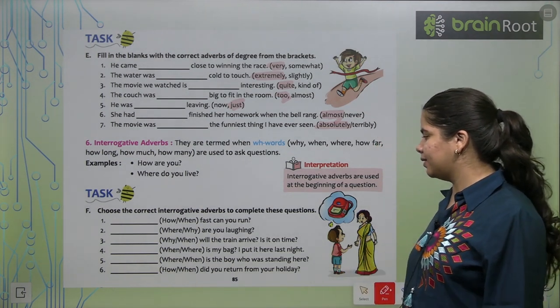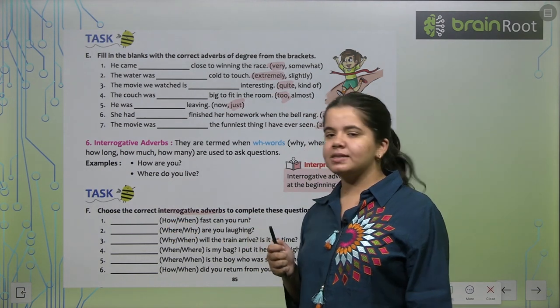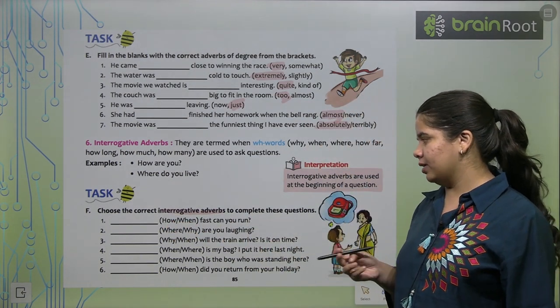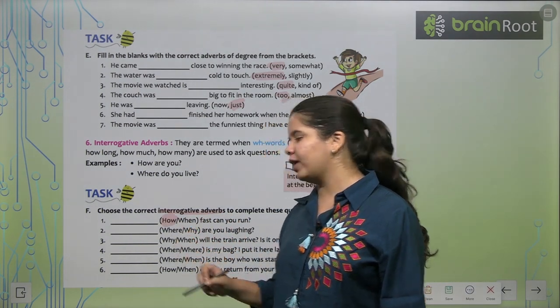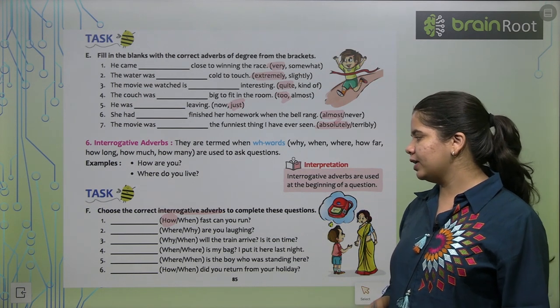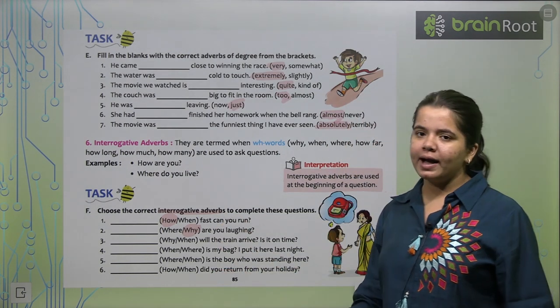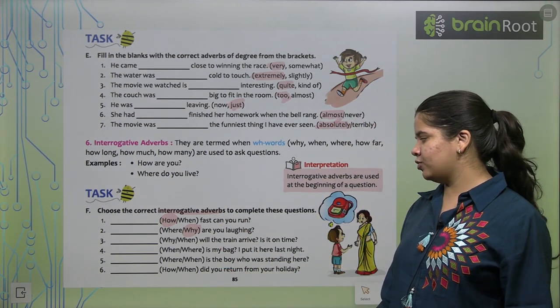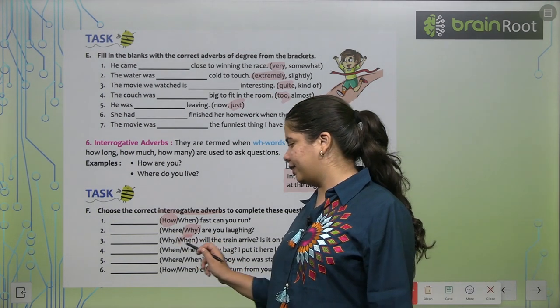Now in this exercise, we are filling in correct interrogative adverbs. Let's see. How fast can you run? So I am just going to highlight it for you. How fast can you run? Next, why are you laughing? Where are you laughing cannot be. Why are you laughing? When will the train arrive? Is it on time? When will the train arrive?